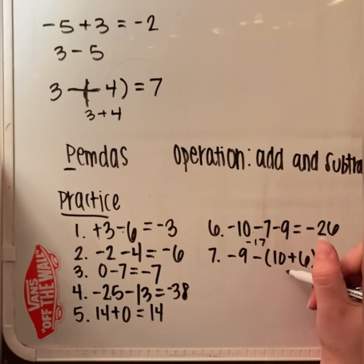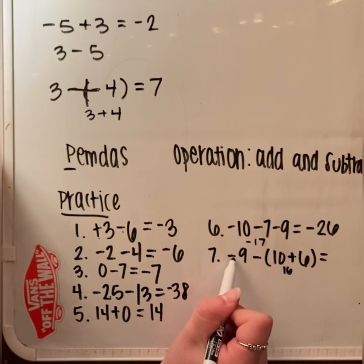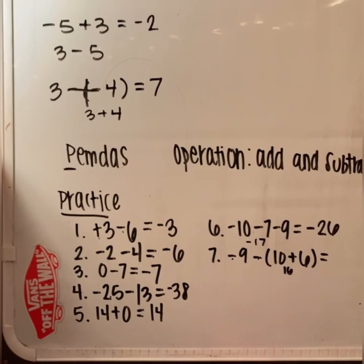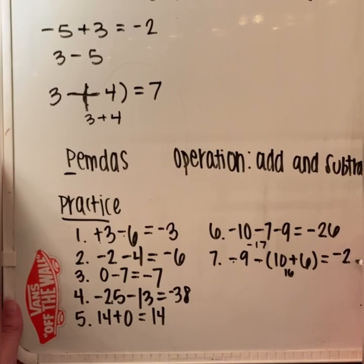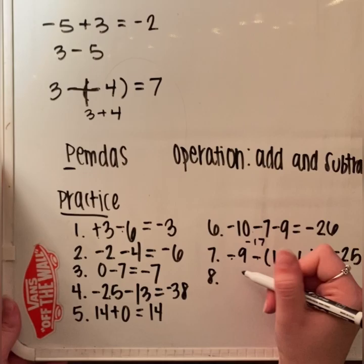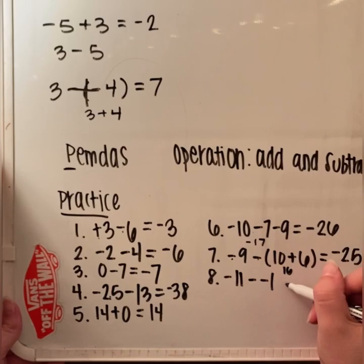Number 7: negative 9 minus 10 plus 6. Remember, we go left to right following order of operations. 10 plus 6 is 16, and then there's a negative in front, so we have the same sign — we combine. Negative 9 plus negative 16 is negative 25.